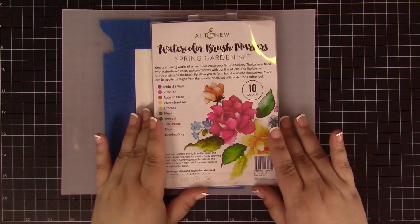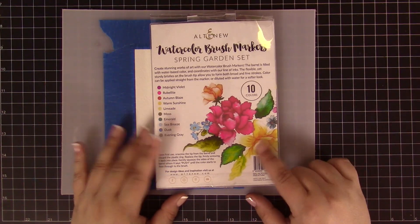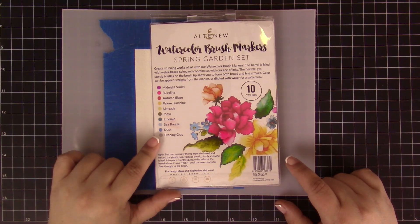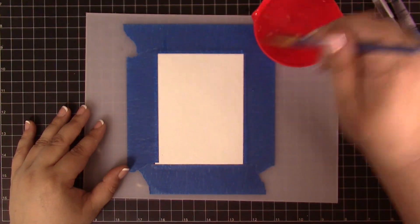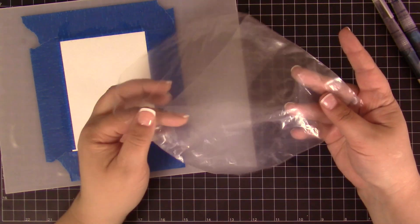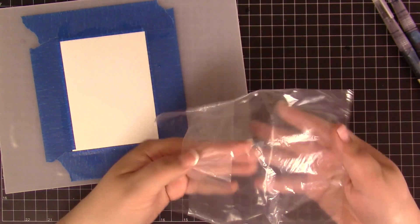I will be creating the background using watercolor brush markers from the Spring Garden set. Specifically I will be using the Sea Breeze and Dusk markers. Next I'm wetting the panel with clear clean water using a white brush. I will be creating the background with the help of a fold-top sandwich bag.